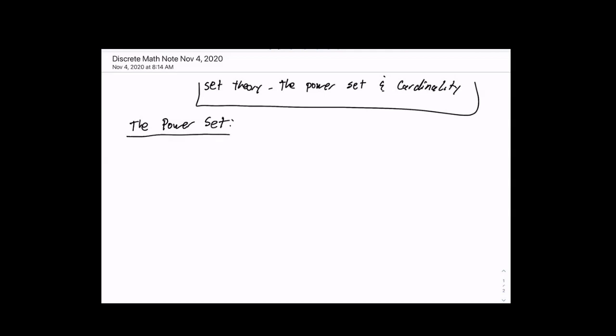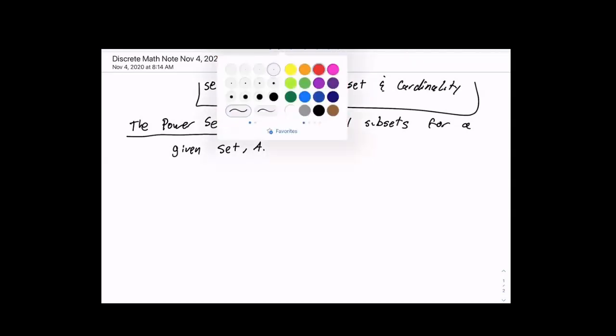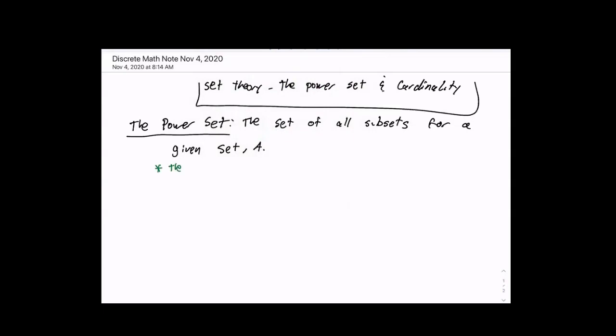The power set is the set of all subsets for a given set. In terms of set A, the power set is every subset possible for a set. It should be noted that the null set is a subset of every set.